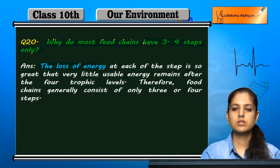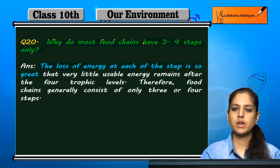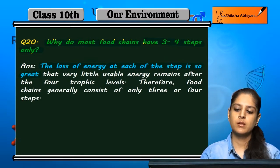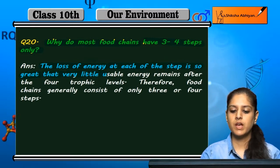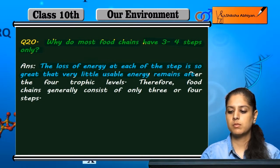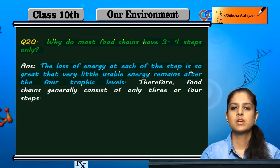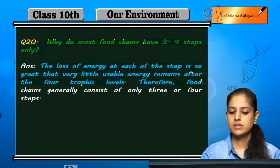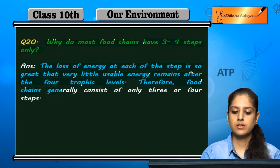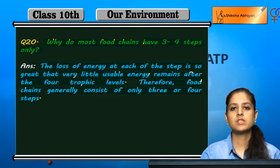Because the loss of energy at each of the steps is so great. In every step there is a loss of energy, and it is so much that very little usable energy remains after the four trophic levels. This is why food chains are generally three to four steps.